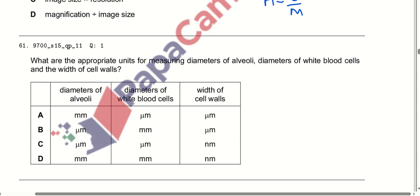What are the appropriate units for measuring the diameters of alveoli, diameters of white blood cells, and the width of cell walls? Alveoli and white blood cells are too small to measure in millimetres — they are measured in micrometres. The width of the cell wall is measured in nanometres as it is much smaller. Option C is correct.